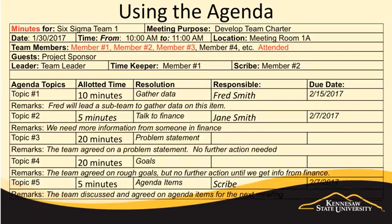Now you need to create the minutes. When the meeting is concluded and results of all agenda topics are filled in, you can create the minutes. The simplest way to do this is to go to the top left of the form and change the word 'agenda' to 'minutes.' Immediately after the meeting, distribute the minutes to the same list that you sent the agenda to, plus any new guests or stakeholders added to the distribution list. Using a standard form or template like this makes it simple to create an agenda, keep the team on task and on time, then convert the agenda to minutes for distribution.